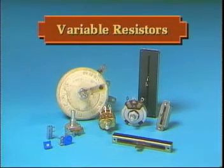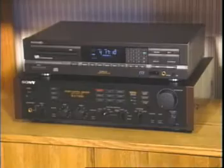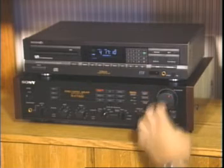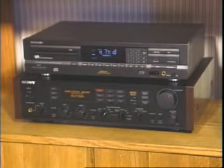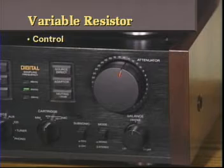Now let's consider resistors whose values can be adjusted or varied. When you want to adjust the light in a room or the volume on a stereo, you normally adjust a variable resistor. A variable resistor is also often called a control, since it controls brightness, volume, or speed.